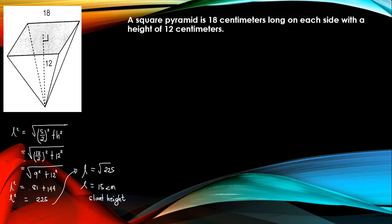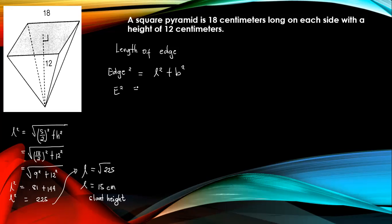Next we need to compute the length of edge. The edge squared equals the slant height squared plus b squared. e squared equals the slant height, which is 15, so 15 squared, plus b squared, where b is 9 — half of 18, or 18 divided by 2.